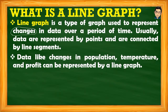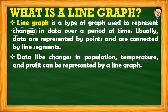Data such as changes in population, temperature, and profit can be represented by a line graph. For example, population changes over time — it may increase or decrease over a certain period. Temperature also varies — it may rise and fall depending on the day. Profit, meaning the earnings of a business, does not always increase; there are times when it goes down, then up again, or stays the same.